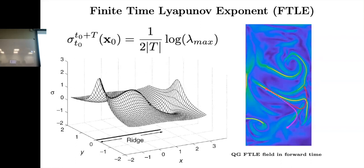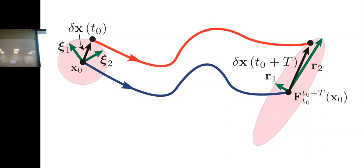These are things that can be calculated once you have a time-resolved philosophy field. Another way to view this is if you look at infinitesimal circles or spheres in the fluid flow, over a short amount of time, capital T, how do these infinitesimal spheres deform into ellipsoids? The length of the semi-major axis of the ellipsoid is related to this finite time Lyapunov exponent.